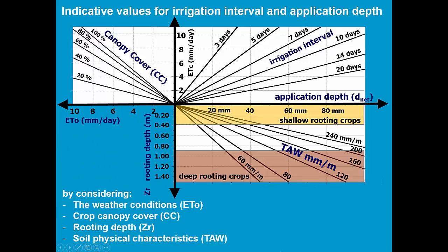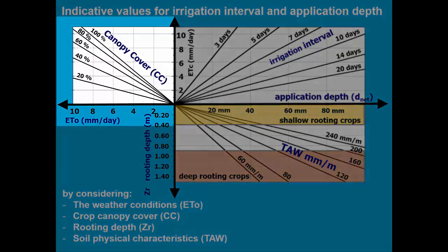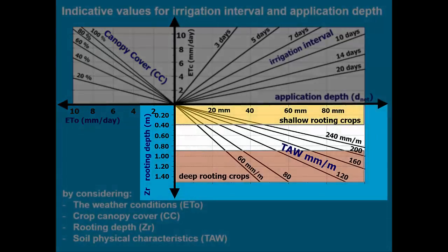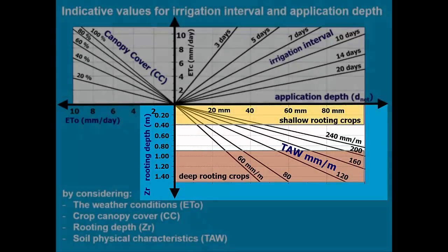Indicative values for irrigation interval and application depth can be obtained with the help of this graph, by considering the weather conditions and the crop canopy cover, and the rooting depth and the soil physical characteristics.